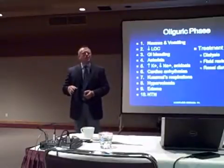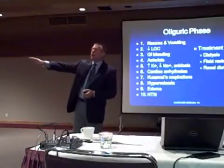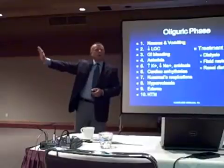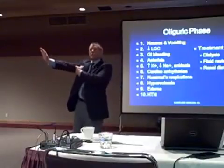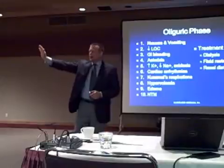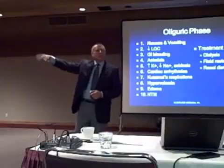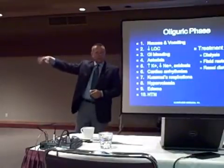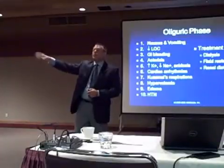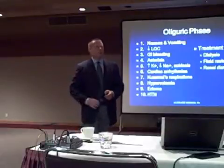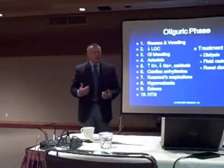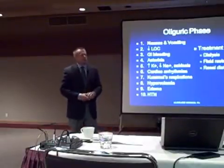To test for asterixis, you ask the patient to hold their arm out at their side and raise the palm up. Because of peripheral nervous system irritability, the patient cannot hold their hand up — instead the hand will flap. That's called asterixis. We also call this 'liver flap' because it happens in patients who have liver disease and have a high ammonia level.